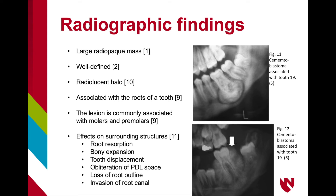Cementoblastomas appear unique radiographically. They appear as radio-opaque masses that are well-defined and have a radiolucent halo surrounding them. They are often large, and they are always associated with the roots of the tooth. The lesions are commonly associated with molars and premolars. You can visualize radiographically the effects the cementoblastoma has on surrounding structures.